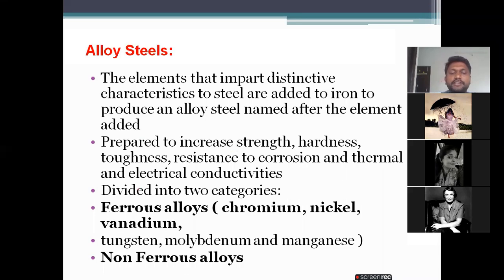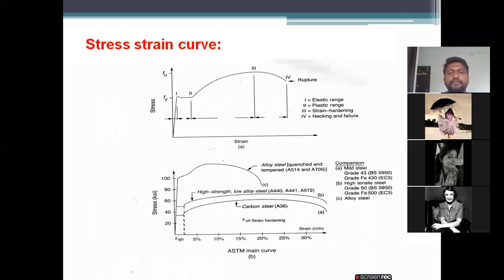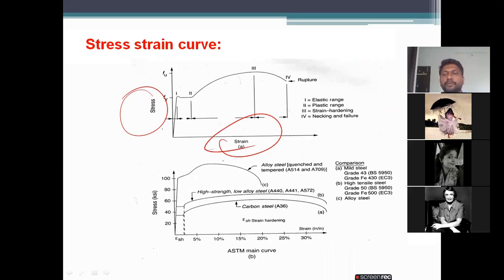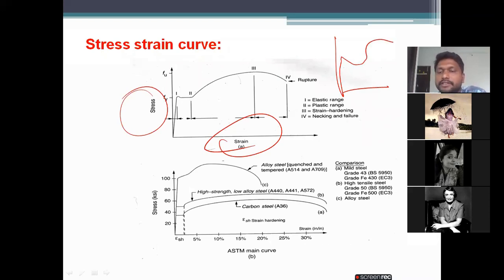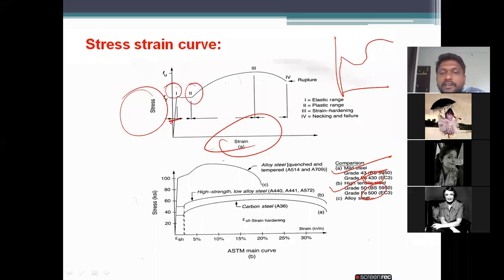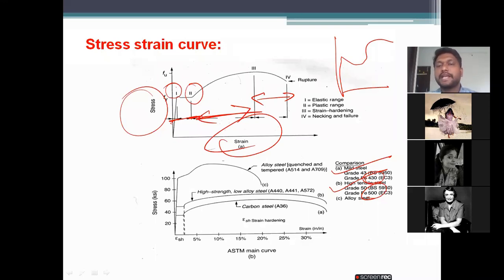Alloy steels are further divided into ferrous alloys and non-ferrous alloys. Regarding the stress-strain curve for steel — you already know this from your materials and RCC studies. Mild steel is graded 43 and high tensile steel is grade 50, corresponding to Fe 430 and Fe 500. The curve shows the elastic range, plastic range, strain hardening range, and finally necking and failure.